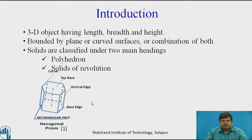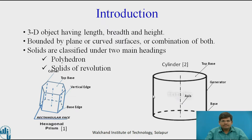Moving on to solids of revolution. Solids of revolution are formed by revolving either a right angle or a rectangle 360 degrees. For example, a cylinder. As you can see, a cylinder has generators instead of edges or faces. The top base and bottom base are both circular. The line joining the center of the top base and bottom base is your axis. It has generators and no edges. These are the two types of solids: polyhedra and solids of revolution.